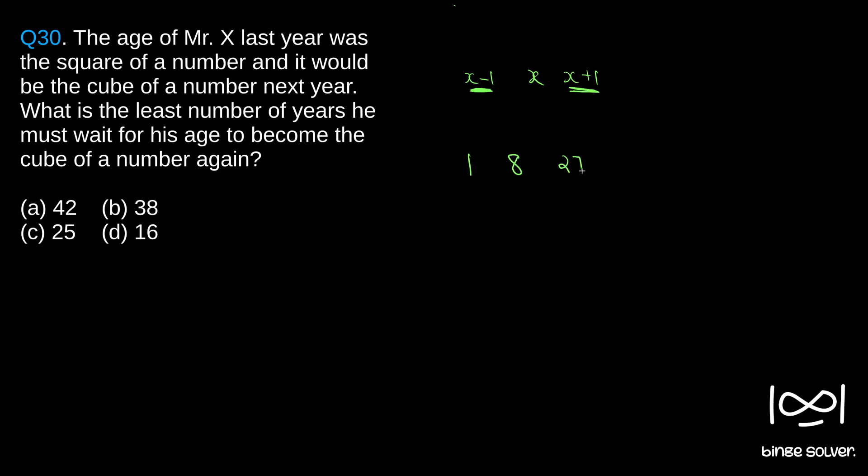equals 27, and 4 cubed is 4×4, which is 16, 16×4 equals 64, and 5 cubed is 5×5, which is 25, 25×5 equals 125.